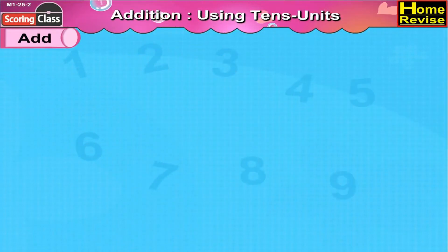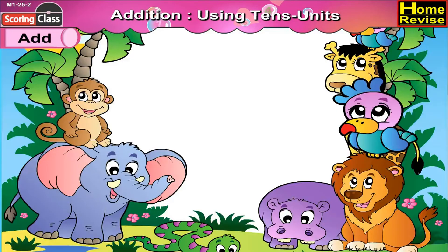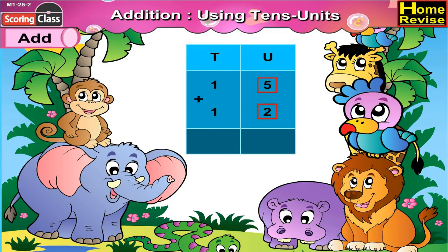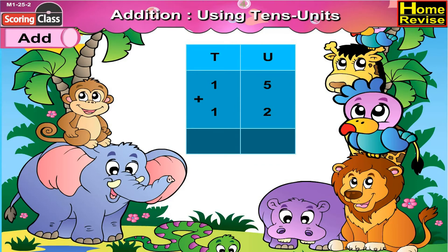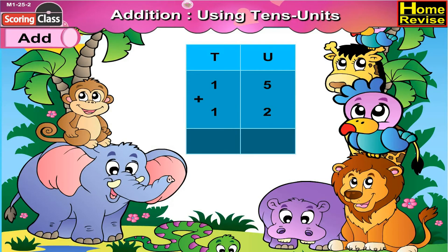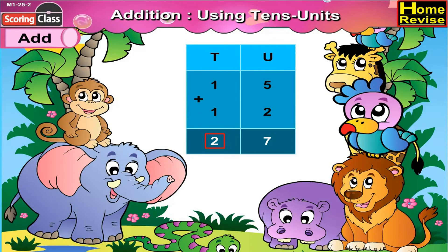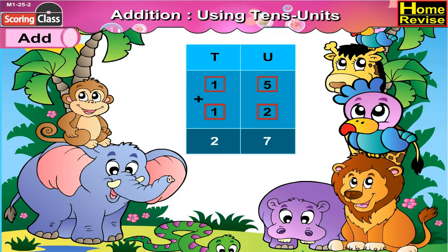In the next picture, under units we have 5 and 2, under 10s we have 1 and 1. Let's begin addition with the units column. 5 plus 2 would be 7, 1 plus 1 is 2. So 15 plus 12 is 27.